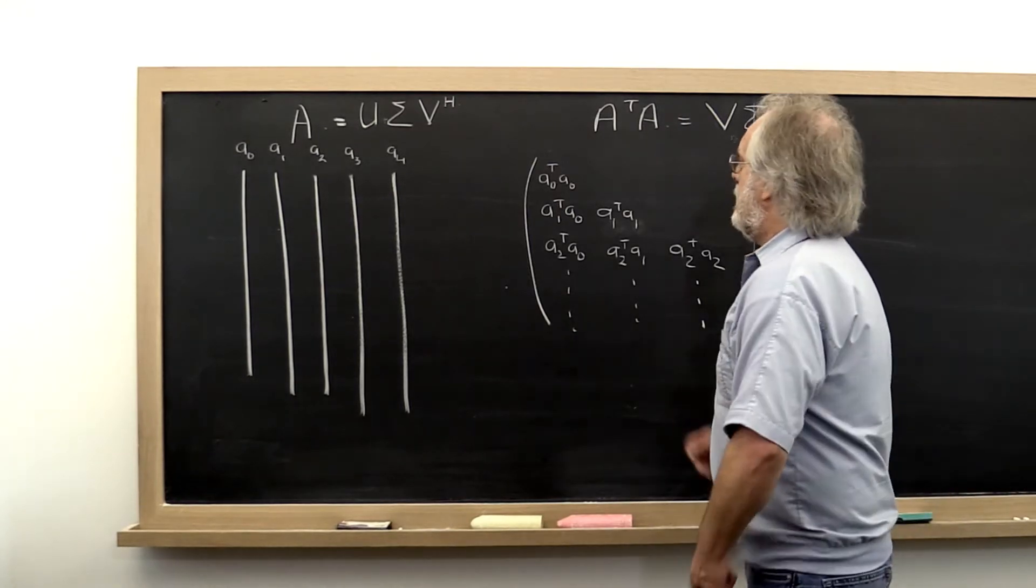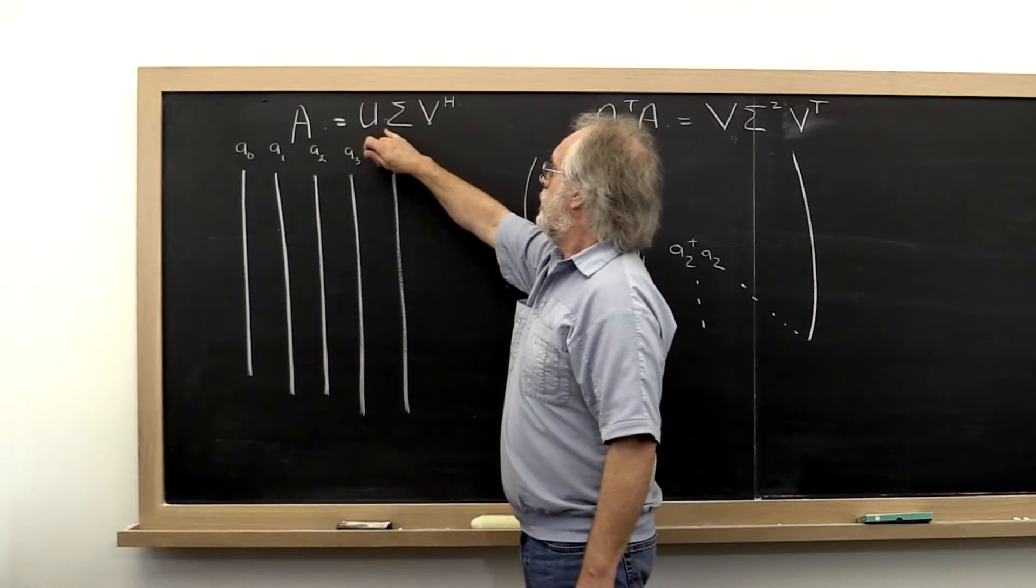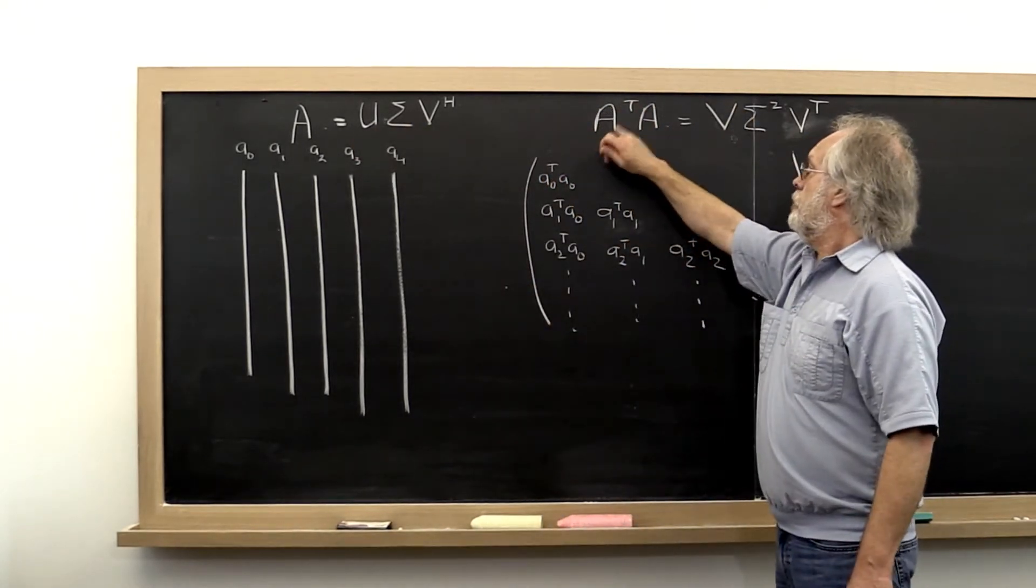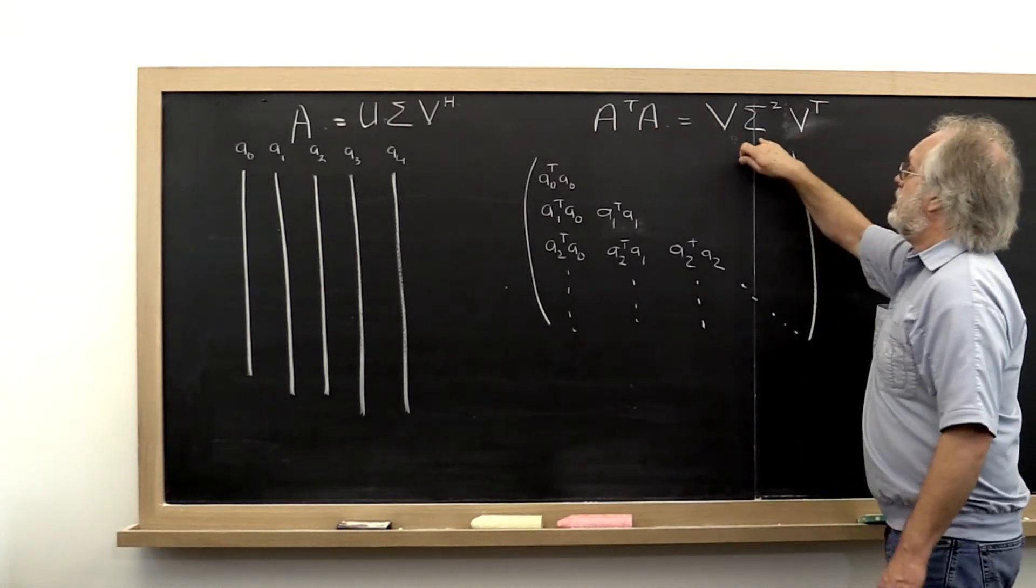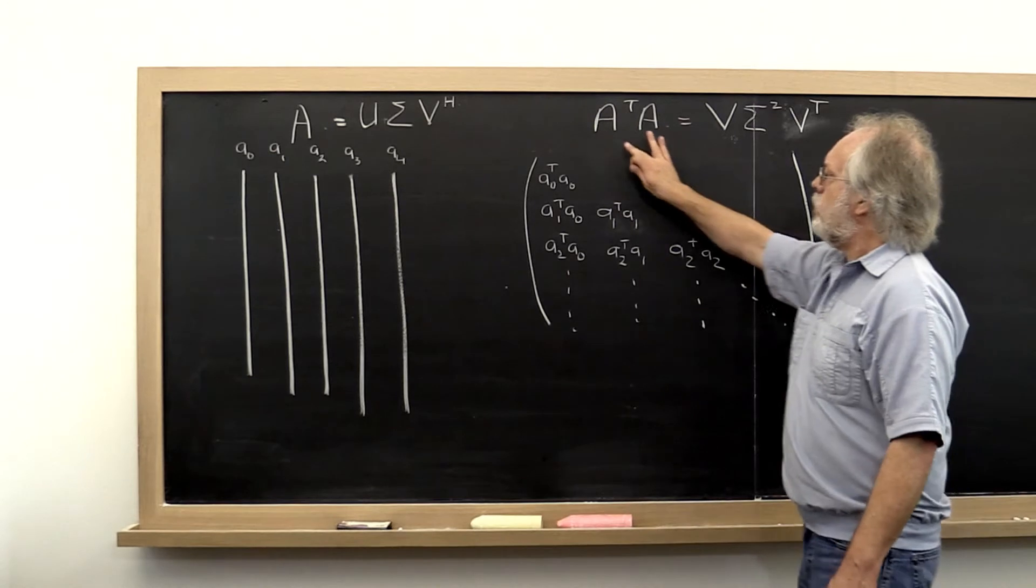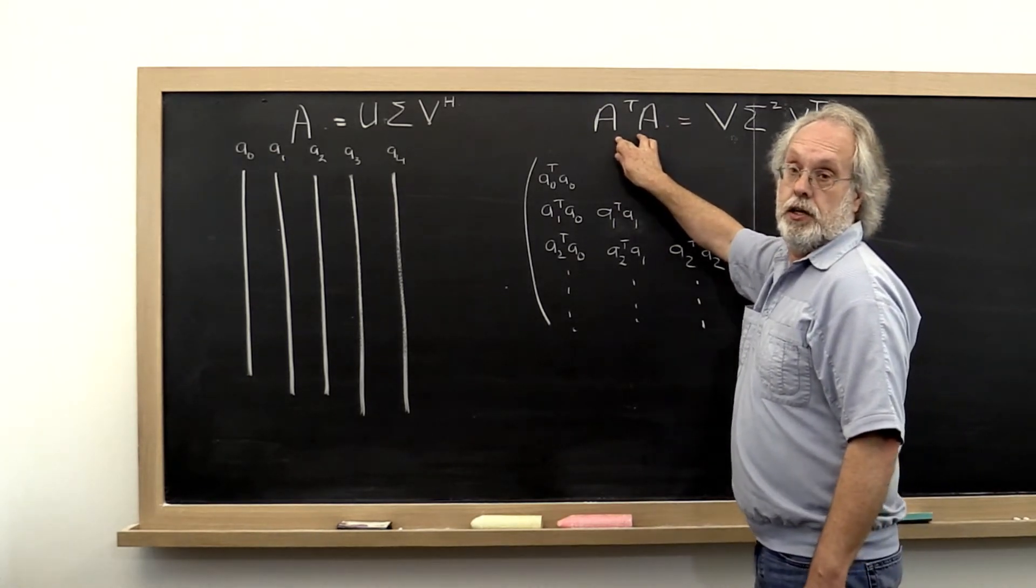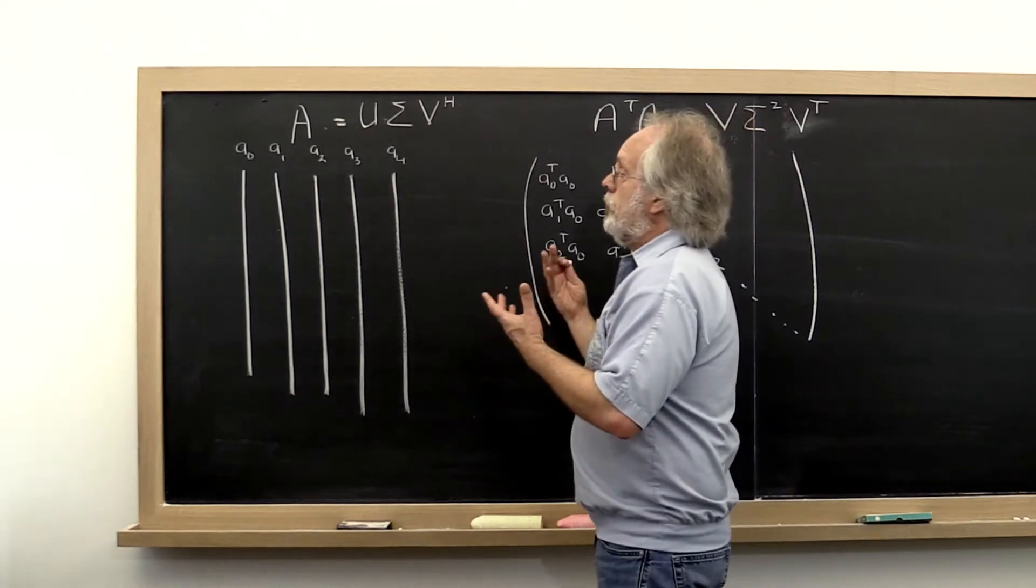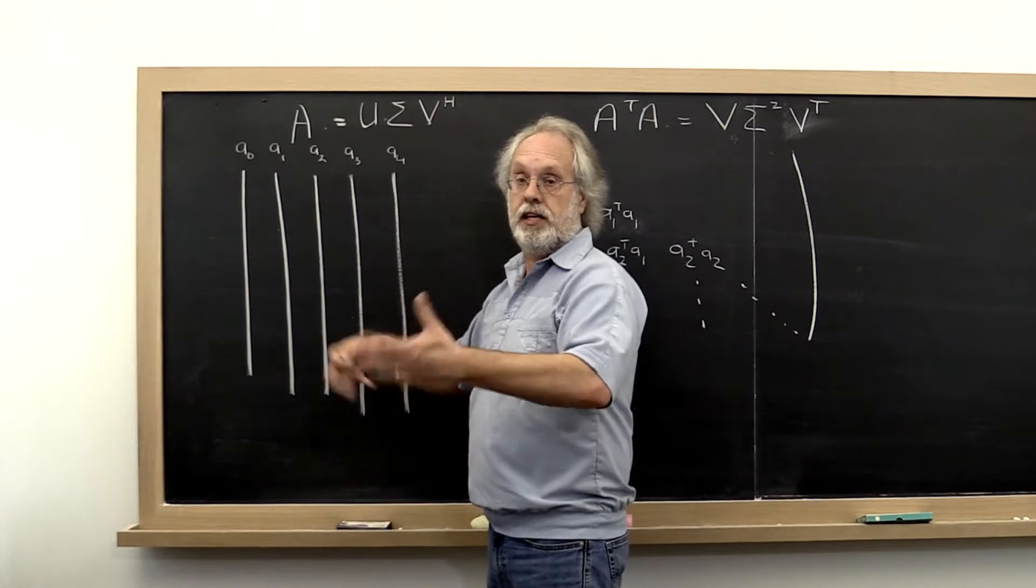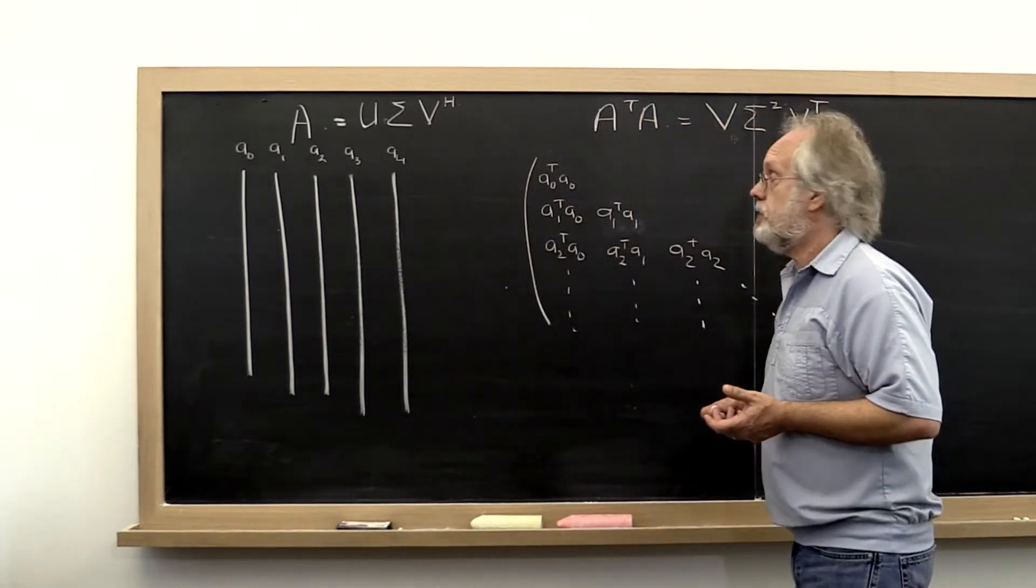Well, we noticed that if A is equal to U sigma V Hermitian transpose, then A transpose A is equal to V sigma squared V transpose. And again, we don't really want to explicitly compute this. We merely want to compute unitary matrices that we apply to matrix A. If we do that, then we get all these nice properties that come from applying unitary matrices.